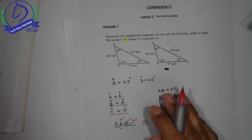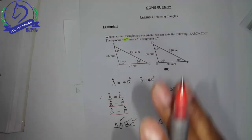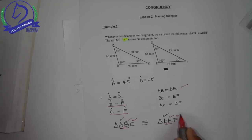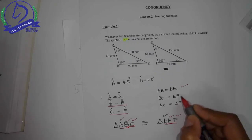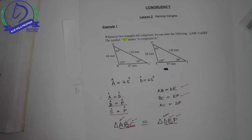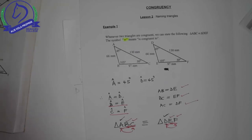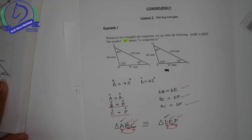Now there's something interesting. Without looking at what we've written down about the sides, just reading from the congruency statement: AB will be equal to DE, BC will equal EF, and AC is equal to DF. So can you see, boys and girls, it is important to name the triangles correctly.